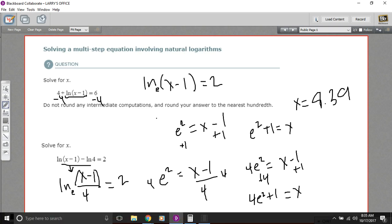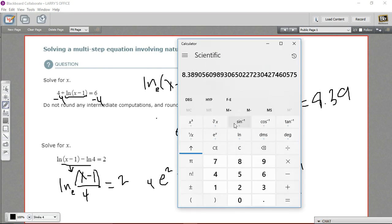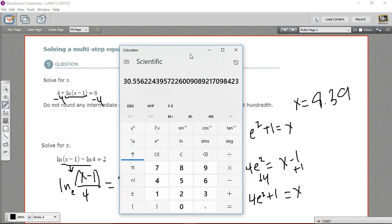And let's go ahead and bring up our calculator on that one. So we're going to again have e squared. We'll start with that. So I'll punch in a 2 and then hit the e to the x. And then we multiply that by 4, and then we add 1. And we get 30.56.